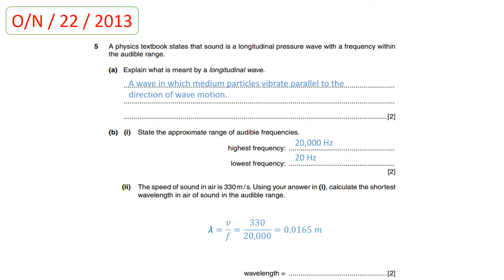In part B1, state the approximate range of audible frequencies. The highest frequency for audible sound is 20,000 hertz and the lowest is 20 hertz. In part B2, the speed of sound in air is given as 330 meters per second. To calculate the shortest wavelength in the audible range, we use the wave equation. Since wavelength is inversely proportional to frequency, we take the highest frequency — 20,000 hertz — and divide 330 by 20,000, giving a wavelength of 0.0165 meters.